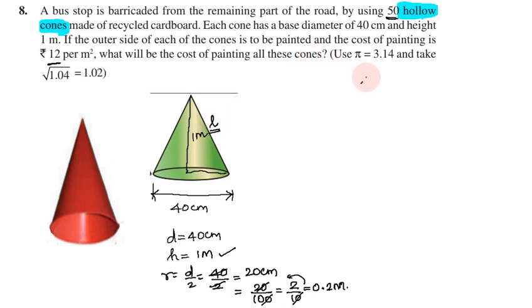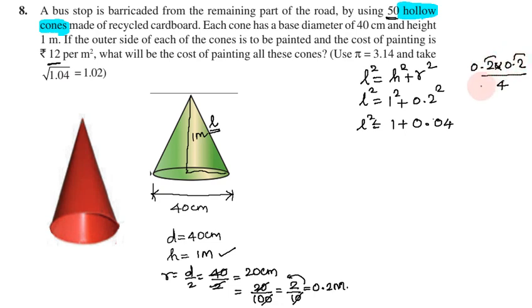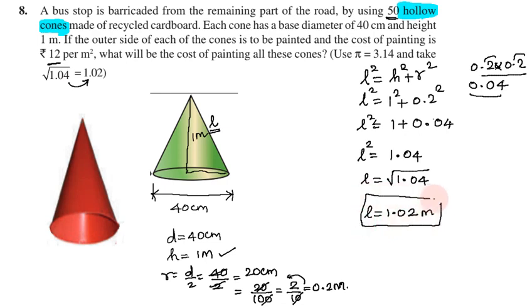First slant height: l² equals h² plus r², so l² equals 1² plus 0.2², which gives l² equals 1 plus 0.04 equals 1.04. Taking square root, l equals square root 1.02 m.